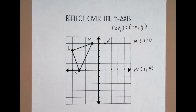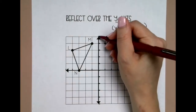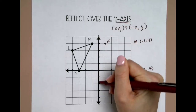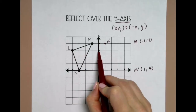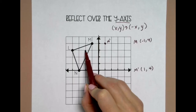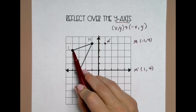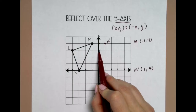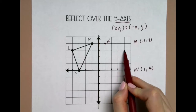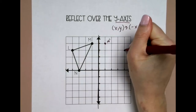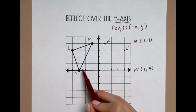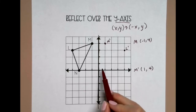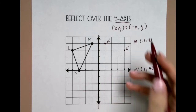Another method that you can use is just counting from the line of reflection. My line of reflection is the y-axis. So I'm going to do this with L. Starting at my line of reflection, L is 1, 2, 3, 4 to the left. So I want to go back to my line of reflection and count 1, 2, 3, 4 to the right. I'm going to do the same thing with N. N is 1, 2, 3 to the left, so back to my line, 1, 2, 3 to the right.